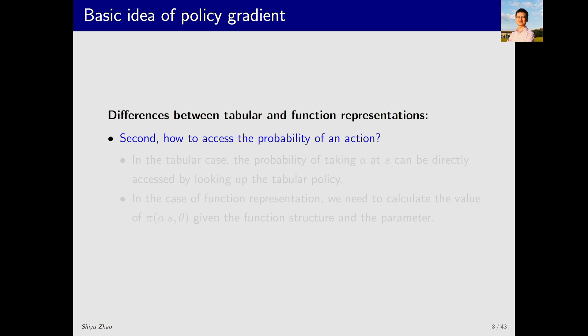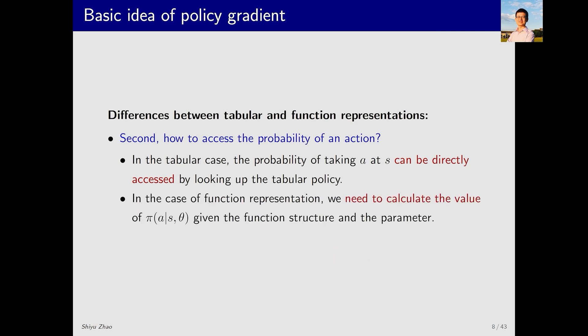The second difference is how we access the probability of an action. When we use a table, if I want to find the probability of taking action a in state s, I simply look it up in the table. It's very straightforward. Now it's still quite simple but slightly more complicated. Since it's not a table, I can't directly look it up. I need to calculate it. For instance, if I'm using a neural network, I input the state s and let the network propagate forward to obtain the outputs π(a1|s,θ) through π(a5|s,θ).